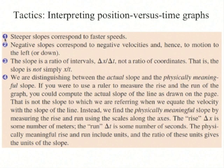Things to keep in mind: steeper slopes correspond to faster speeds on a position versus time graph. A negative slope means a negative velocity. The slope is a ratio of intervals, not a ratio of coordinates. You can't just do x divided by t — you have to do the change in x divided by the change in t. That's important.